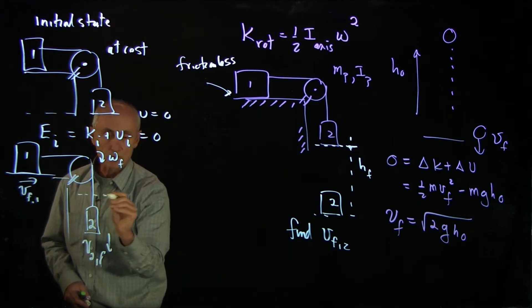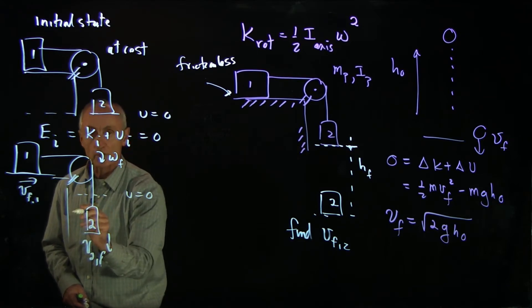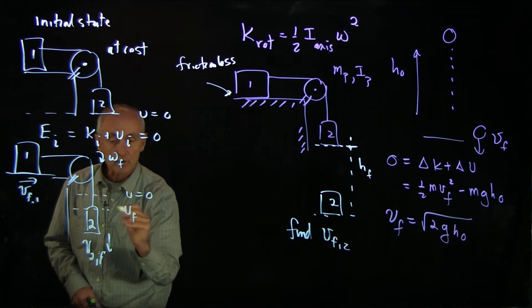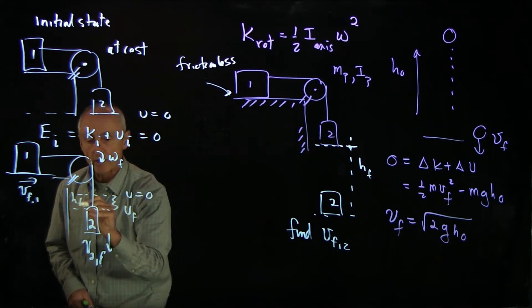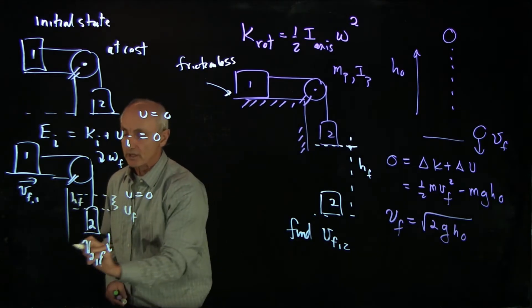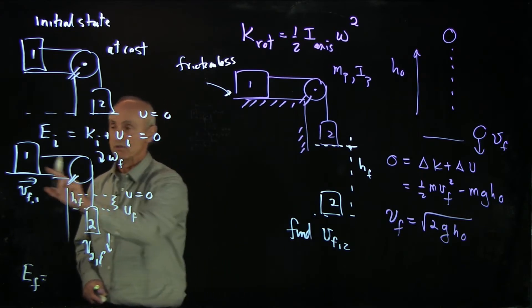Let's just suppose that this was our u equals 0 position. Although it's not so clear in the diagram, u final, it has moved down height h final. So what is the energy in our final state? Well, we have to consider all the different pieces.